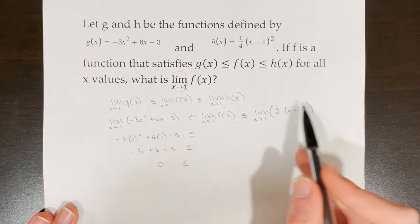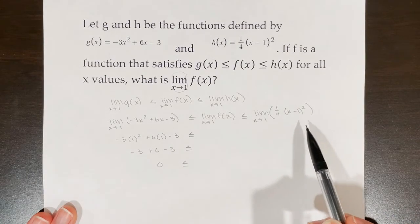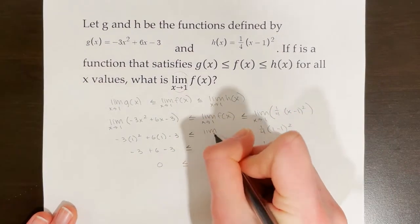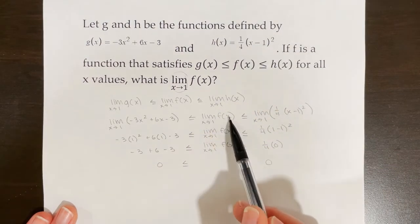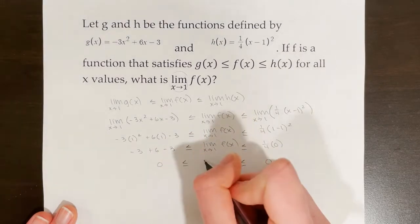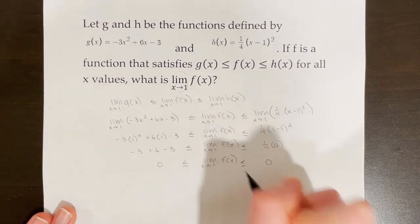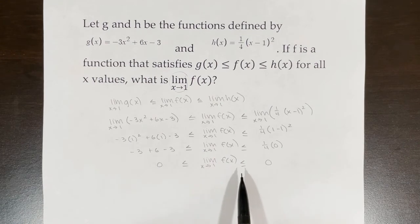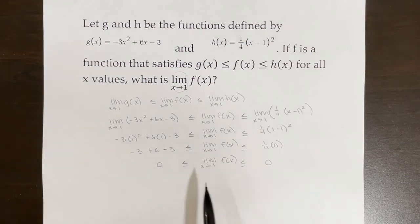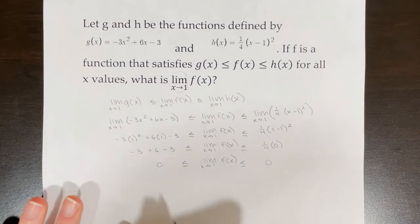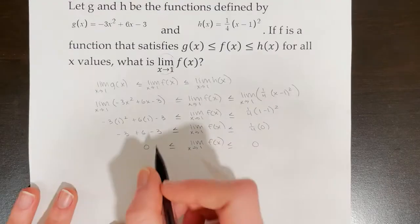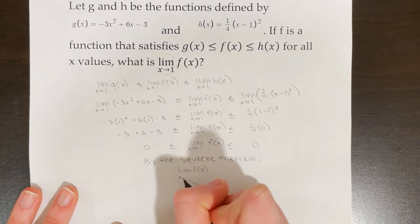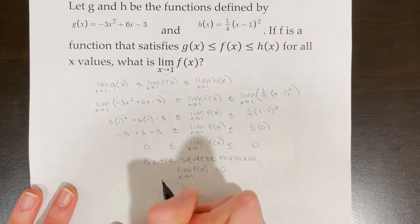I'm going to do the same thing with the left function. ¼(x − 1)² is also continuous, so I can use direct substitution. After simplifying both sides, I have 0 ≤ the limit of f(x) as x→1 ≤ 0. So by the squeeze theorem, the limit of f(x) as x approaches 1 equals 0. I need to write: by the squeeze theorem, the limit of f(x) as x approaches 1 equals 0. And that would be my answer.